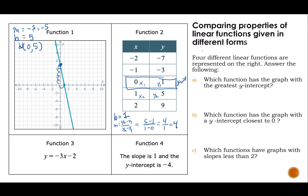For function three, given in graphical form, I see that my slope is negative three and my y-intercept is negative two. And for function four, I'm just told that my slope is one and my y-intercept is negative four. We could write the equation for that, but we don't have to.